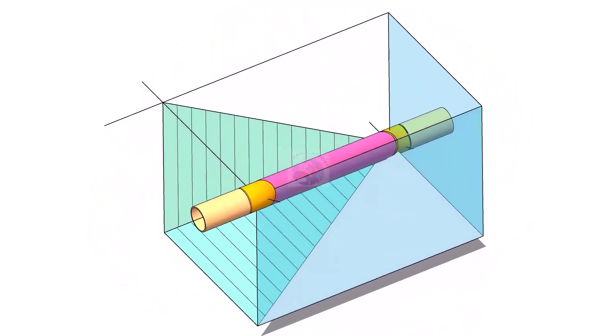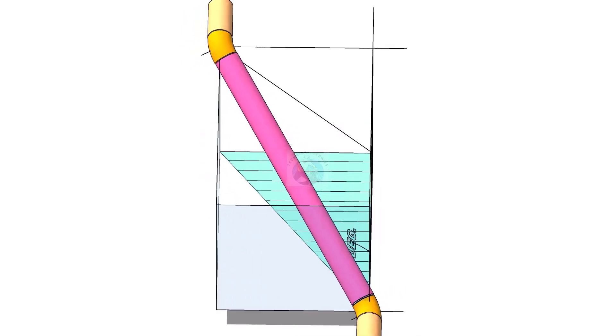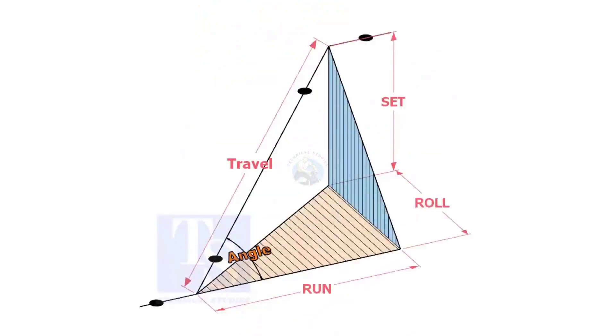Welcome to technical studies. In a piping drawing of a double rolled offset, usually the dimensions of the run, set, and roll are given.